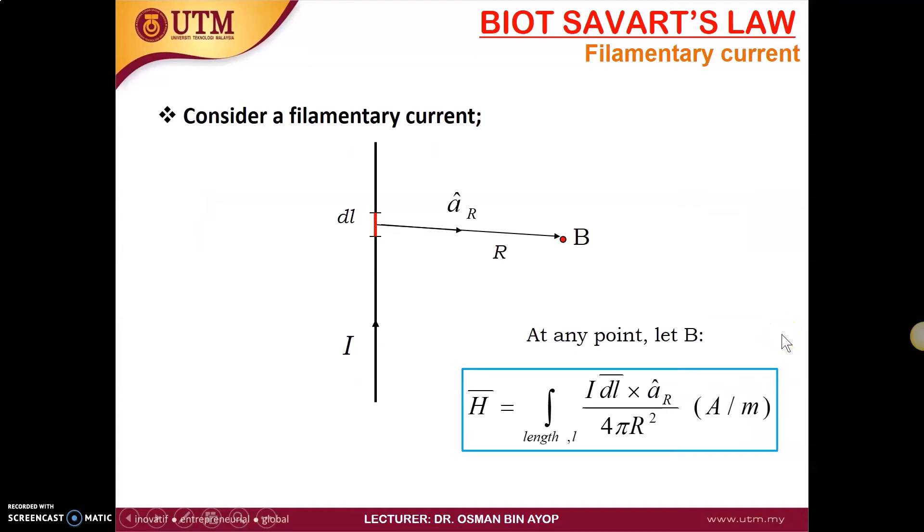Let's consider a filamentary current. Let's say the current is flowing towards the Z direction, and we want to find what is the magnetic field intensity at a certain point. Let's say the point is at B. Let's take a sample amount of current, dL here. This is the distance, this is the unit vector.